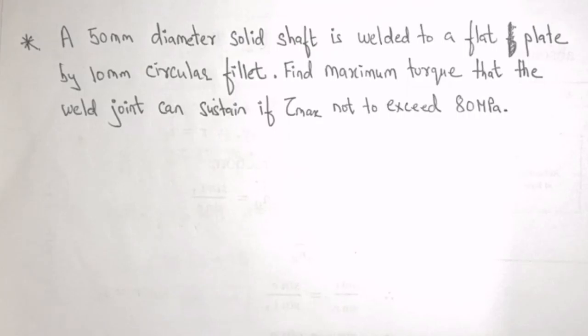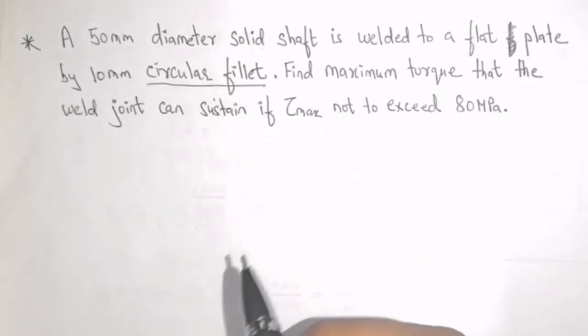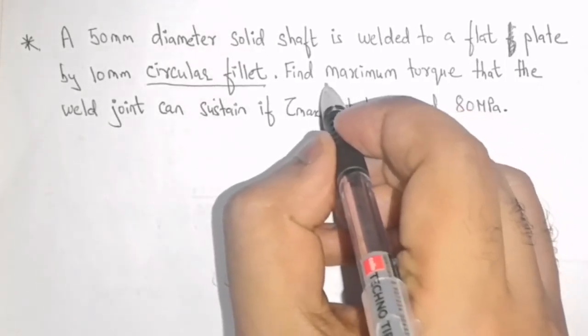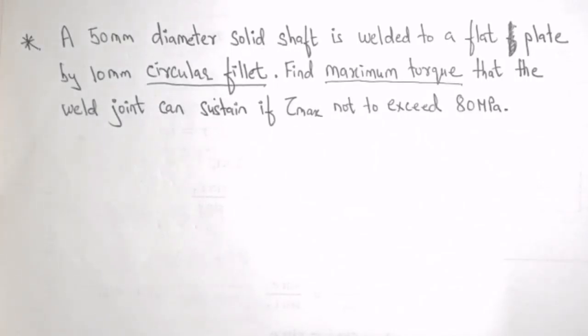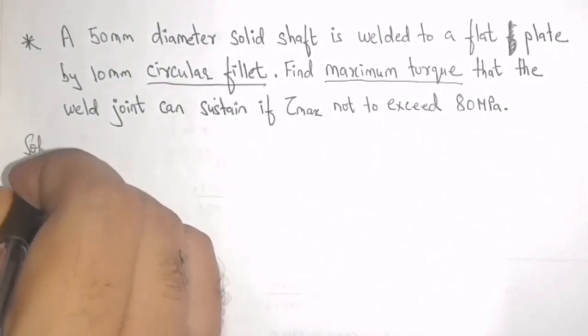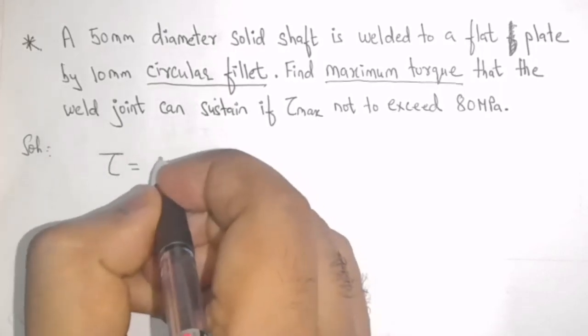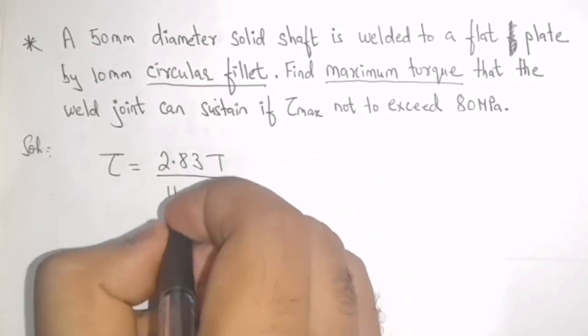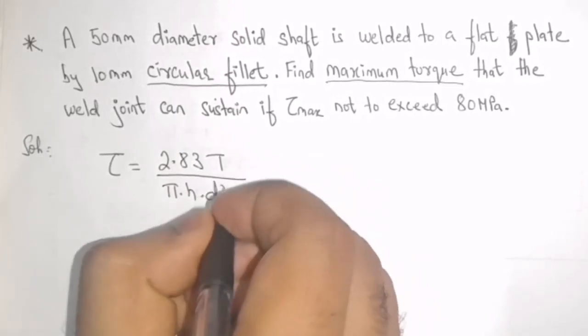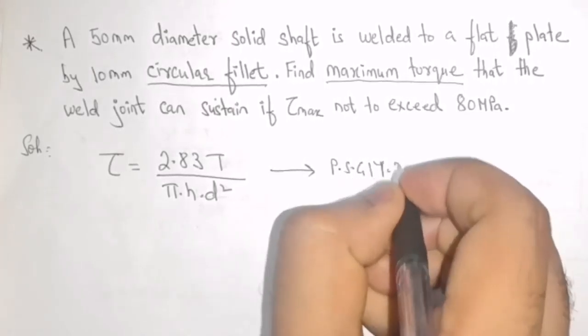From the question, we have identified that there is a circular fillet weld and it is been applied with a torque. So, again it is the same case. So, in solution, I will write my first step as Tau is equal to 2.83 T divided by pi into H into D square and this relation I got from PSG 11.3.